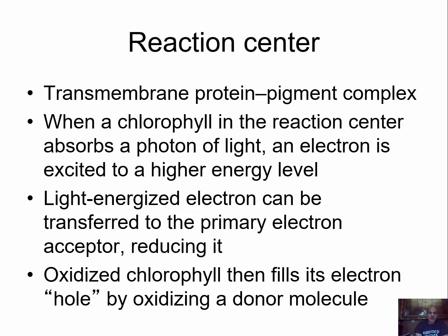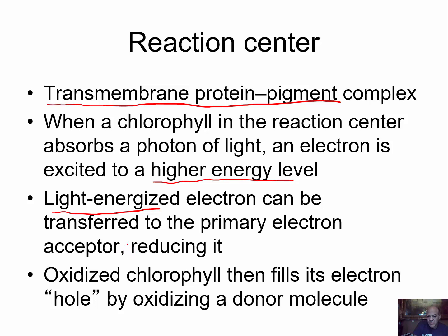Looking at the reaction center, it's also a portion of this photosystem. There you have another protein-pigment complex — a transmembrane complex that goes all the way across. When a chlorophyll A in the reaction center absorbs a photon of light, the electron is excited to a much higher energy level. This light-energized electron can then be transferred to a primary acceptor. When that acceptor takes the electron away from the chlorophyll, the chlorophyll is oxidized, but the electron acceptor is reduced, at least temporarily. This leaves the chlorophyll with a void — it's missing an electron — and we're going to need to replace that.